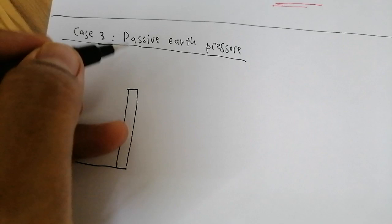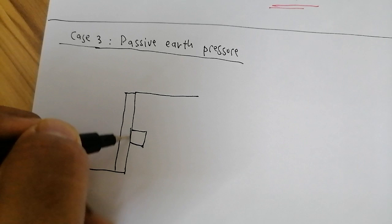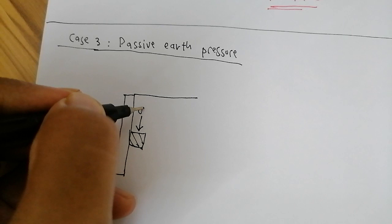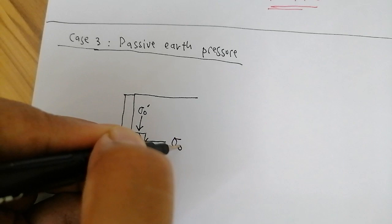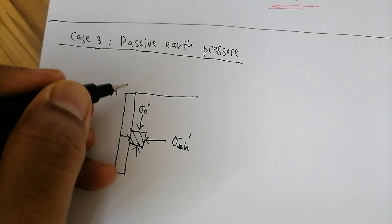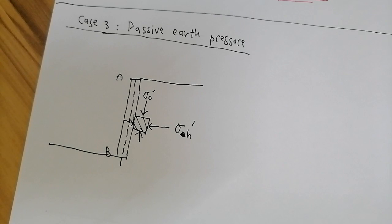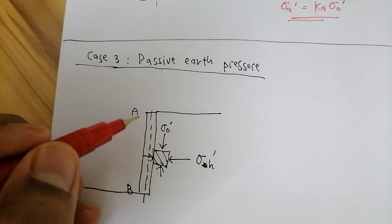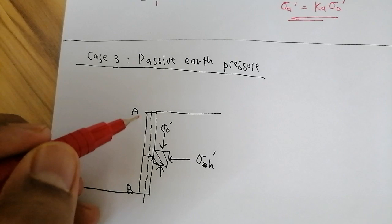We have a small soil mass here under investigation, subjected to vertical effective stress and horizontal effective stress. Wall AB with height h — this is the center line of the wall. For the passive case, the retaining wall moves into the soil rather than away from it.